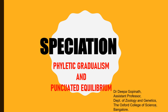Hello students, today we would discuss two theories explaining the possible rates at which evolution occurred, i.e. phyletic gradualism and punctuated equilibrium.